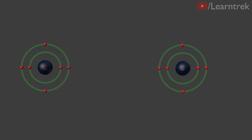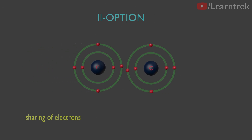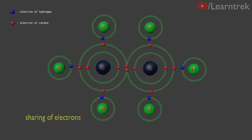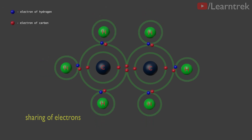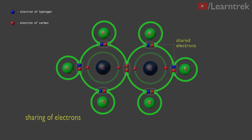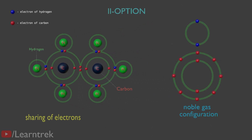Carbon overcomes this problem through the second option. Carbon shares its valence shell electrons with other atoms of carbon or with atoms of other elements. These shared electrons belong to the outermost shell of both atoms. In this way, both atoms achieve noble gas configuration and become stable.